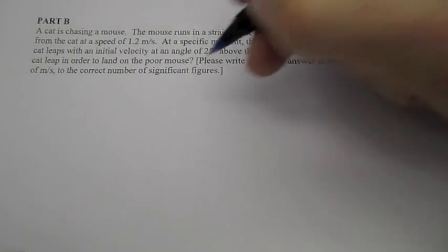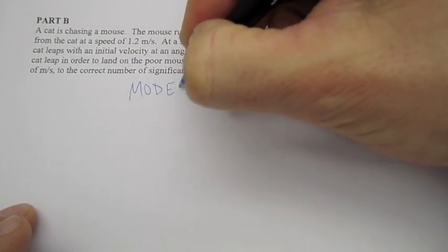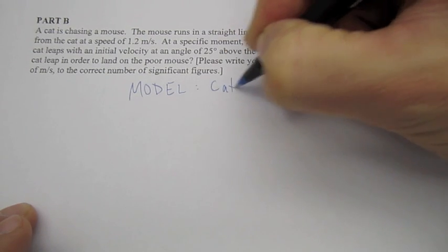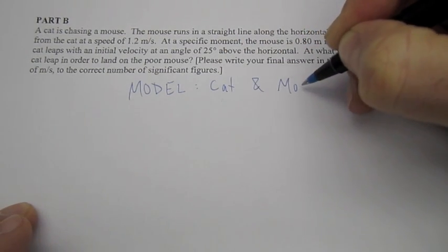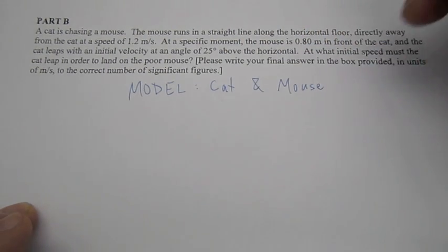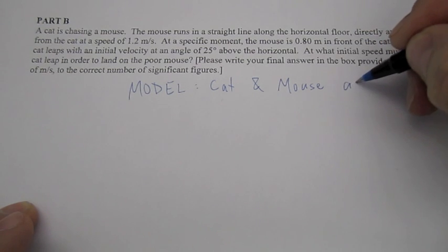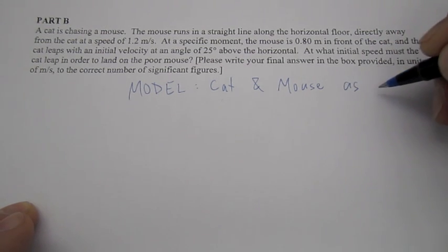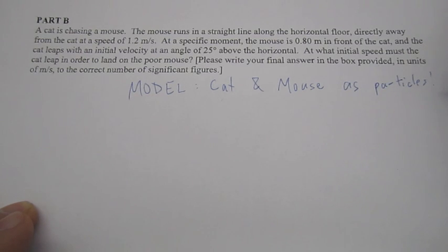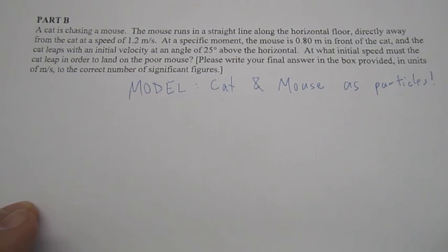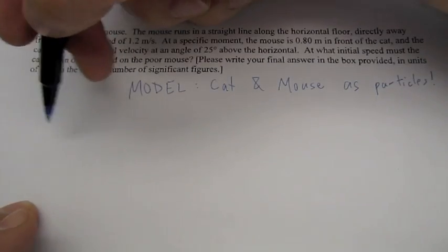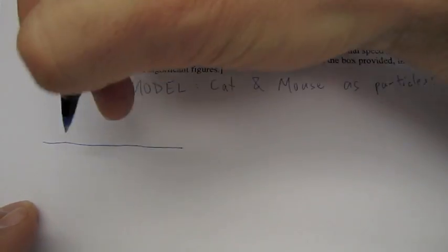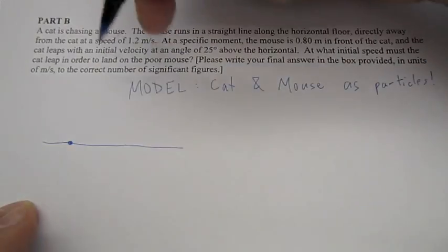Okay, so the first thing we will do is we will model the cat and the mouse as particles, which is maybe a little bit silly, but since the sizes of the cat and the mouse are not given, that's pretty much all we can do. So, I'll just put a little exclamation point there, because it's a little weird, but let's draw a diagram. So, here's the flat floor.